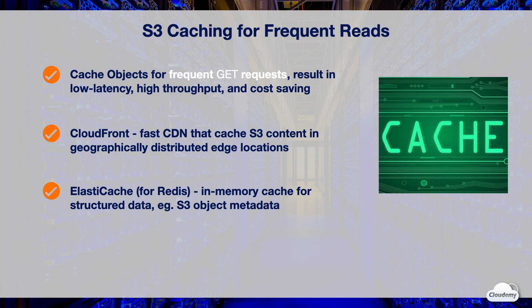The difference is that CloudFront can cache almost any types of content globally and leverage global edge locations, whereas ElastiCache is recommended to store structured data in memory; however, it doesn't leverage global edge locations.